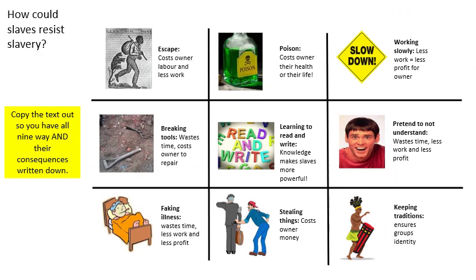Here is a table of nine popular ways that slaves would resist slavery. Starting at the top: escape — if a slave could get away, that would cost the owner labour, meaning less work would be done with one fewer slave. Second is poison — if you worked in the big house preparing meals for the plantation owner, there was the option of poisoning them. It was difficult to get hold of poison, but it would cost the owner their health and in some cases their life.